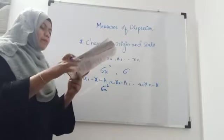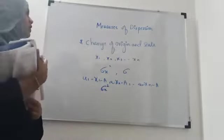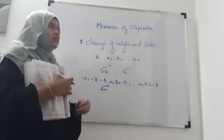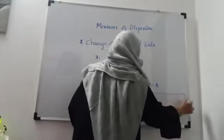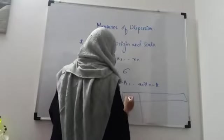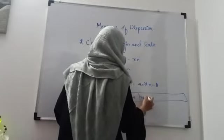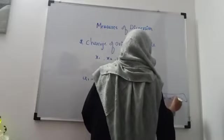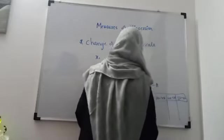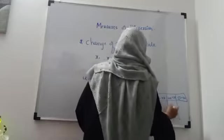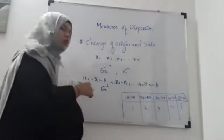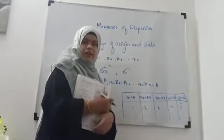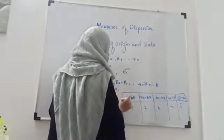Similarly, 'a' is considered as a class mark. That means if you have class intervals 10–20, 20–30, 30–40, 40–50, 50–60, you have to first find out the class mark, which is the middle value: 15, 25, 35, 45, 55.